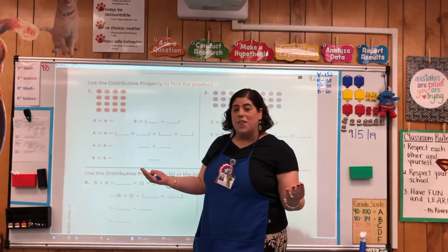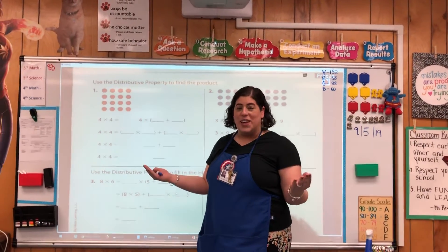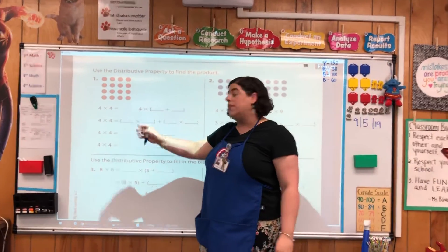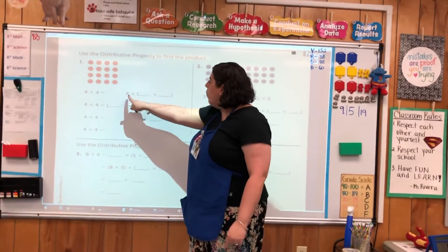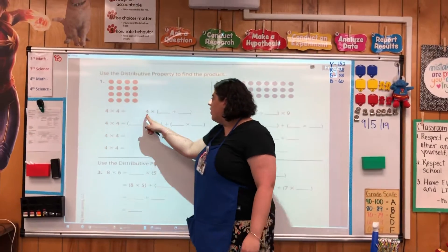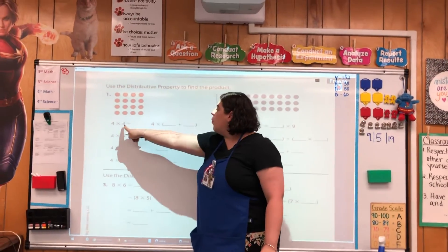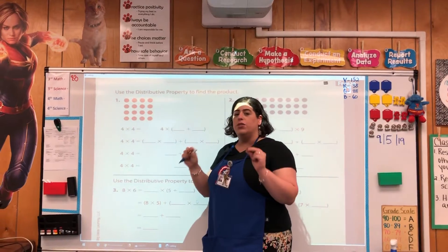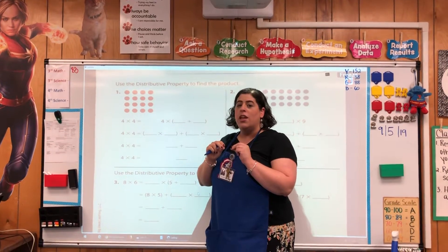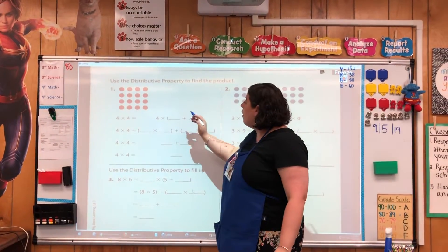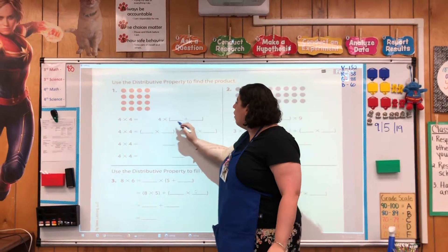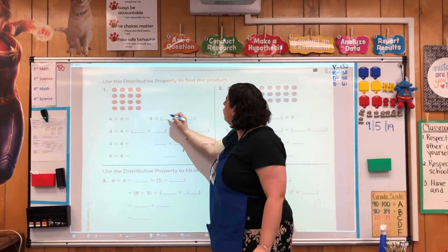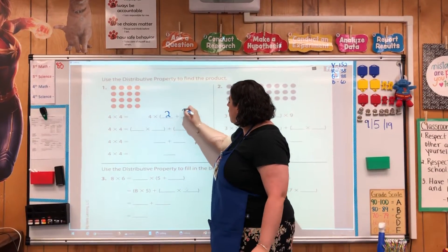Of course if we did memorize our facts, we could be done a lot quicker, but we need to know how to break these apart. We are keeping the first factor 4 the same, but we are splitting the second 4 into two addition numbers that can also equal 4. So I'm going to split the 4 into 2 plus 2.